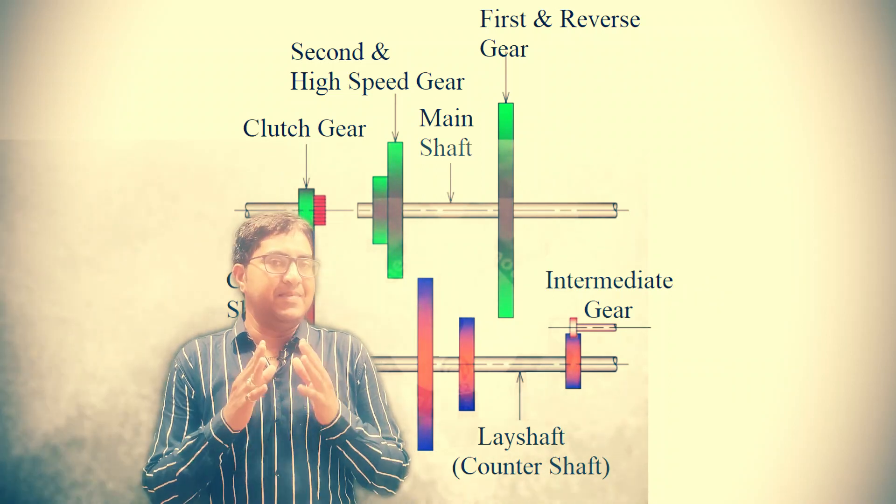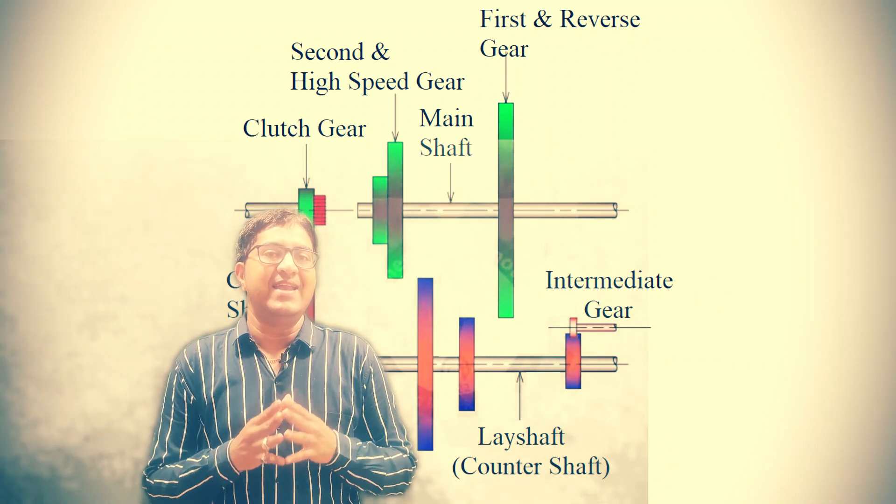So in different conditions we need different leverage, or we can say different needs of speed and torque. This is the need of gearbox. By using some mechanism we can shift the gear from first to second, second to third, and we can achieve different speeds and torque. This is the need of gearbox in automobile. Today we will discuss simplest type of gearbox, it is a sliding mass gearbox.